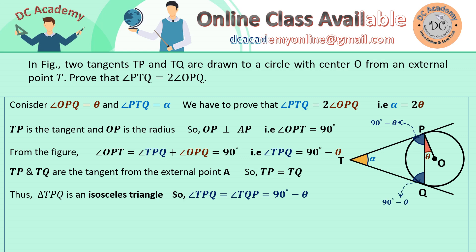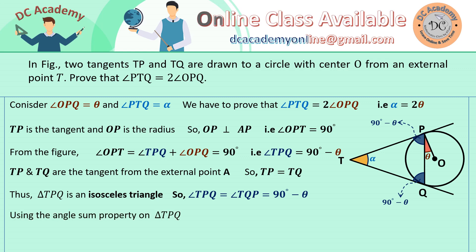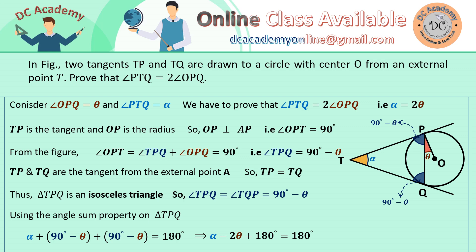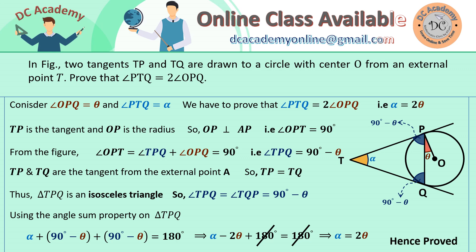Now, for triangle TPQ we know all three angles, so we apply the angle sum property: the sum of all angles equals 180 degrees. Therefore, alpha plus two times (90 minus theta) equals 180. This gives alpha plus 180 minus 2 theta equals 180. The 180s cancel from both sides, leaving alpha equals 2 theta. That is exactly what we aimed to prove, so our result is proven.